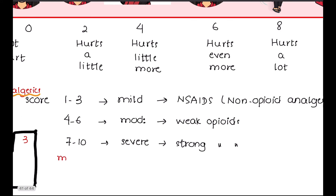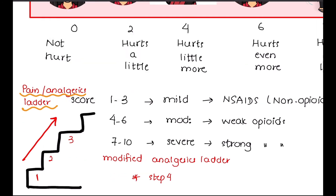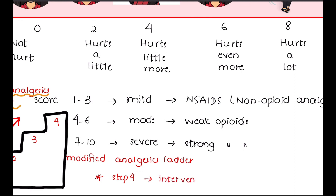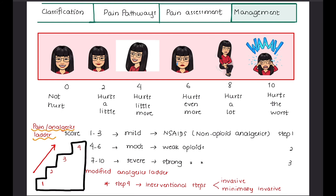Recently, WHO modified the pain ladder and added a new step. It is now revised into a 4-step ladder. Interventional therapies are added in step 4, including invasive and minimally invasive procedures like nerve block and nerve ablation.